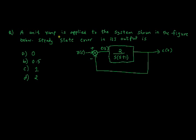A unit ramp input is applied to the system shown in the figure below. The steady state error in its output is — we have four options: A is 0, B is 0.5, C is 1, and D is 2.